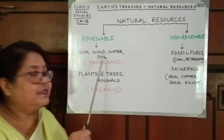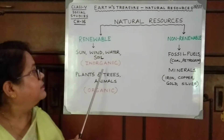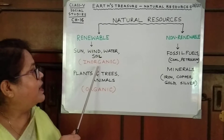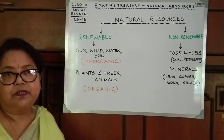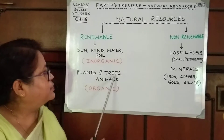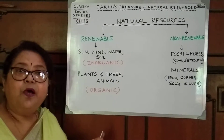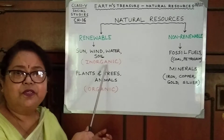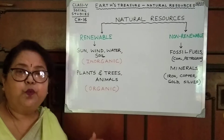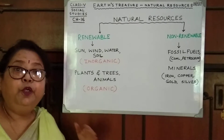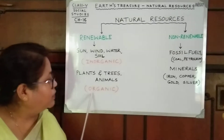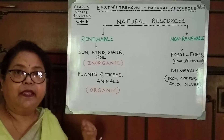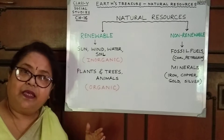There is also a subdivision. Sun, wind, water, and soil are known as inorganic resources. Plants, trees, and animals are known as organic resources. Inorganic resources are the resources we get from non-living things, and organic resources are the resources we get from living things.